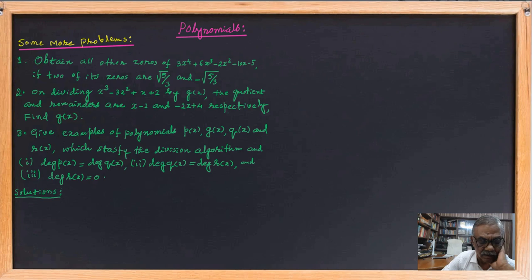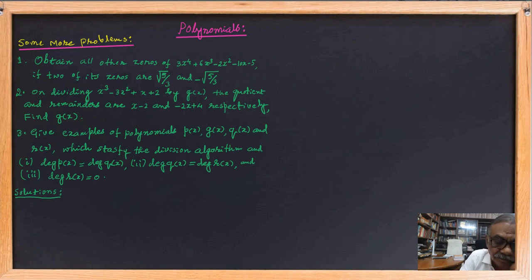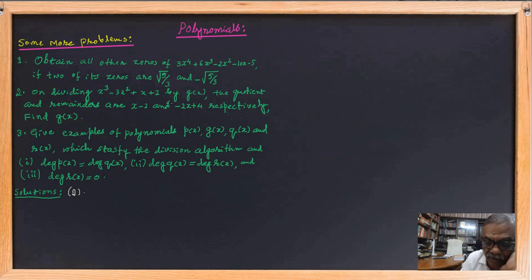That is problem two, the second problem. Solution of the second problem: on dividing x cubed minus 3x squared plus x plus 2 by g(x), the quotient and remainder are these.